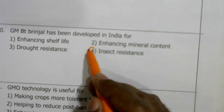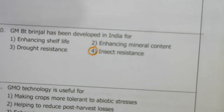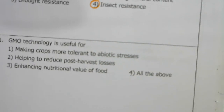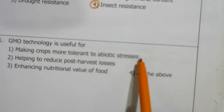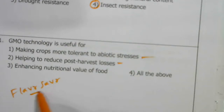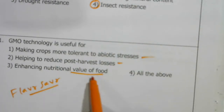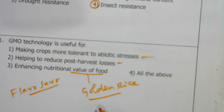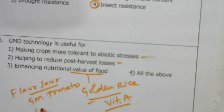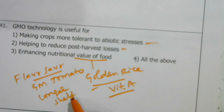GM Bt brinjal has been developed in India for insect resistance. GMO technology is useful for making crops more tolerant to abiotic stress and salinity, helping to reduce post-harvest loss (like Flavr Savr tomato which has a longer shelf life), and enhancing nutritional value — like golden rice, a genetically modified rice rich in Vitamin A. So the answer is the fourth option.